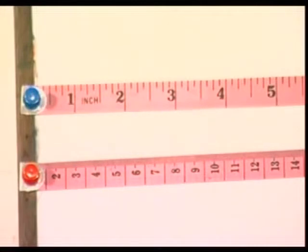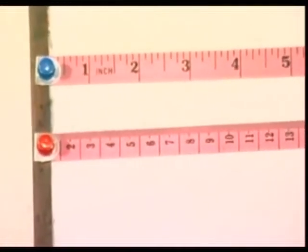Six point two. Why 6.2? Because there's a leftover of two out of a whole centimeter. So when I have a part of 10, I have a decimal point. Before that part, I would have a decimal point.